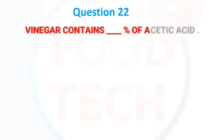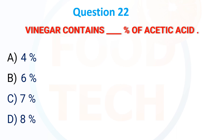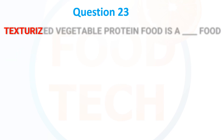Vinegar contains dash percent of acetic acid: A) 4%, B) 6%, C) 7%, D) 8%. The answer is A) 4%.